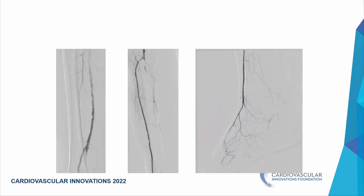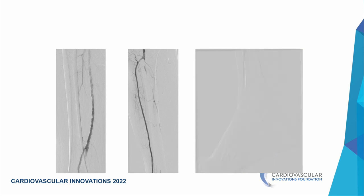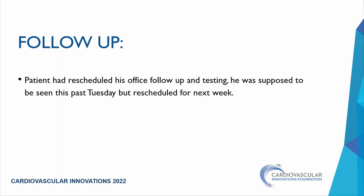The final images showed the SFA with moderate diffuse disease but nothing severe, and the SVG looking good. The Supera image was not captured correctly in the presentation. Follow-up was scheduled for the following Tuesday. ABI and TBI are obtained at one month post-procedure as per protocol.